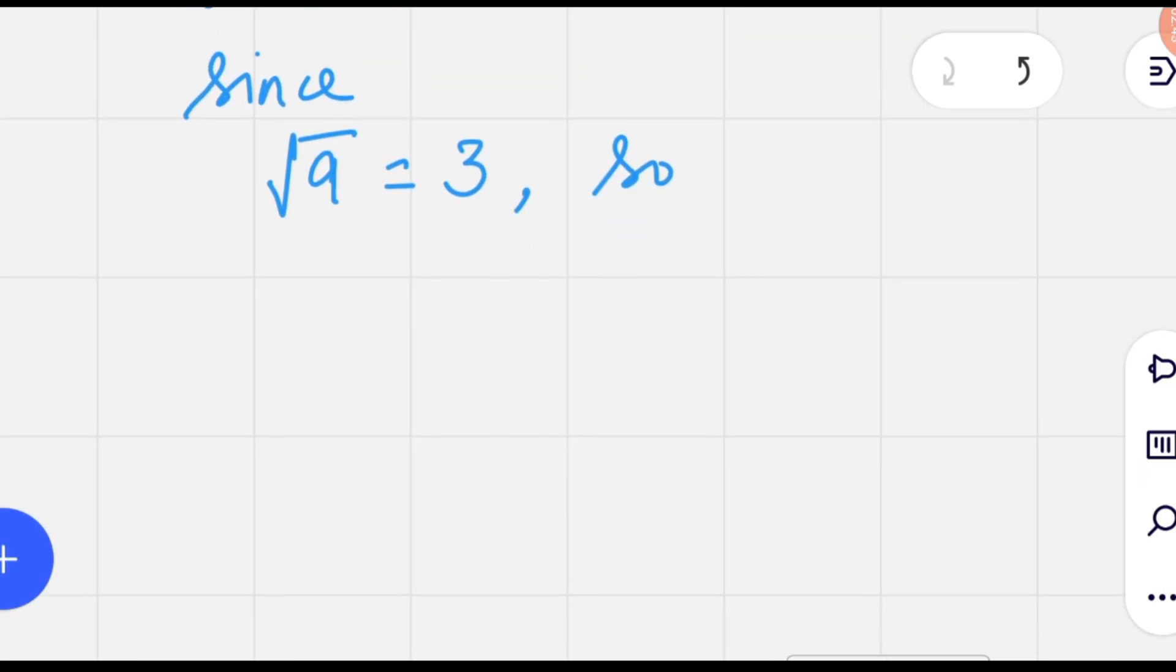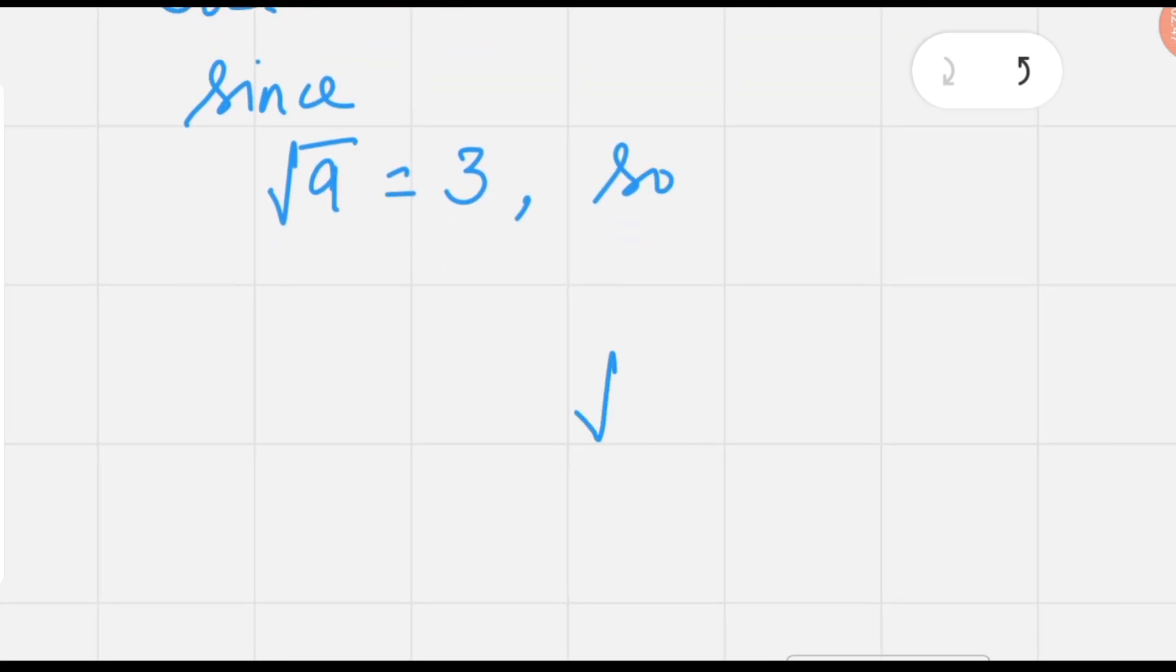Now again we have radical 64 to the index 3, which is nothing but the cube root of 64. We know that cube root of 64 is 4.